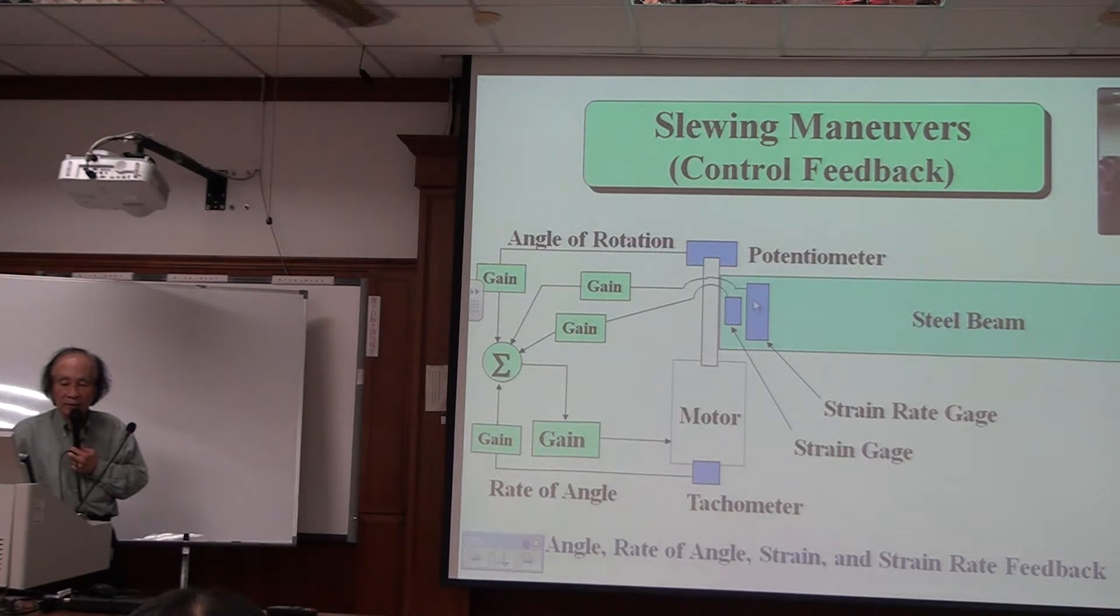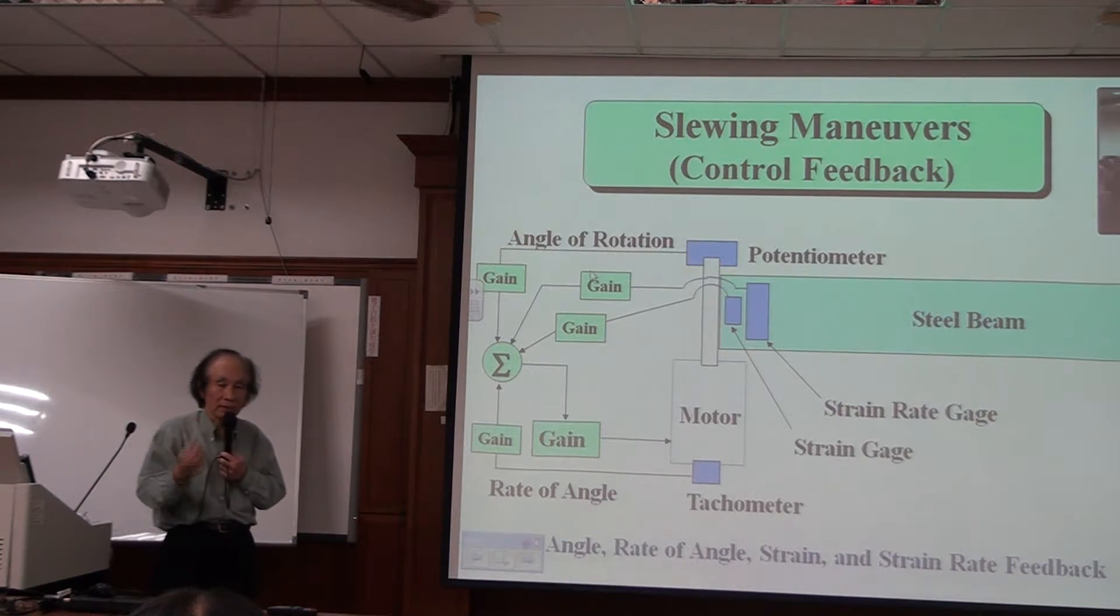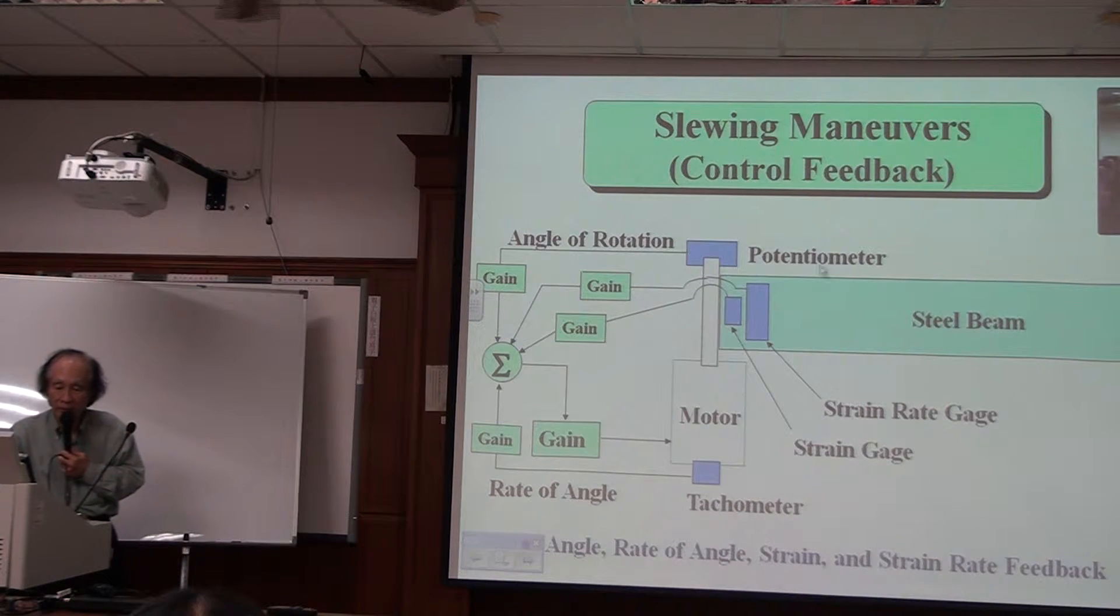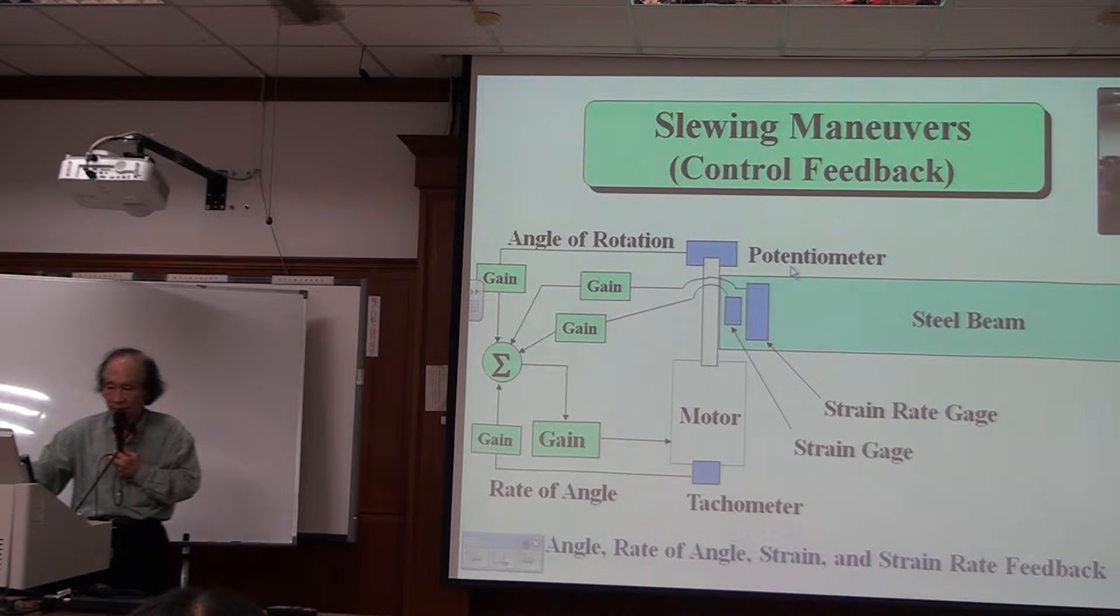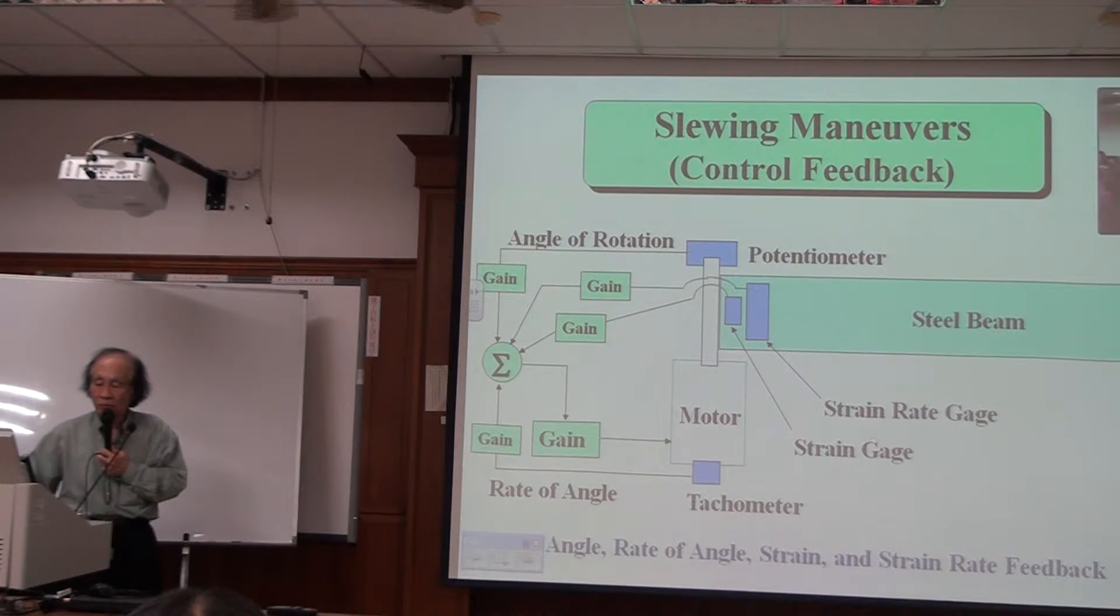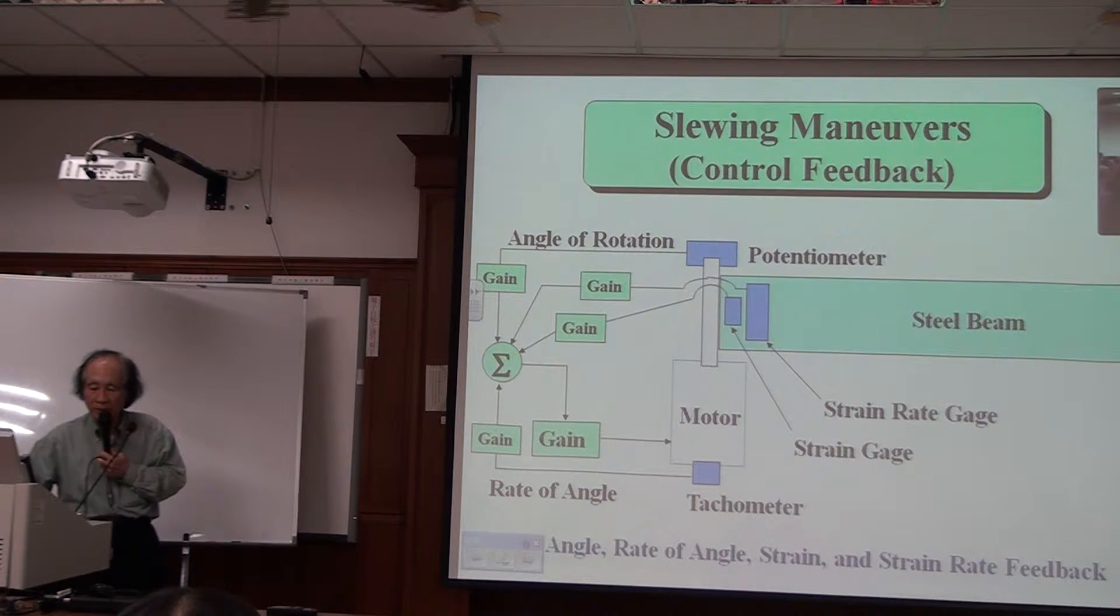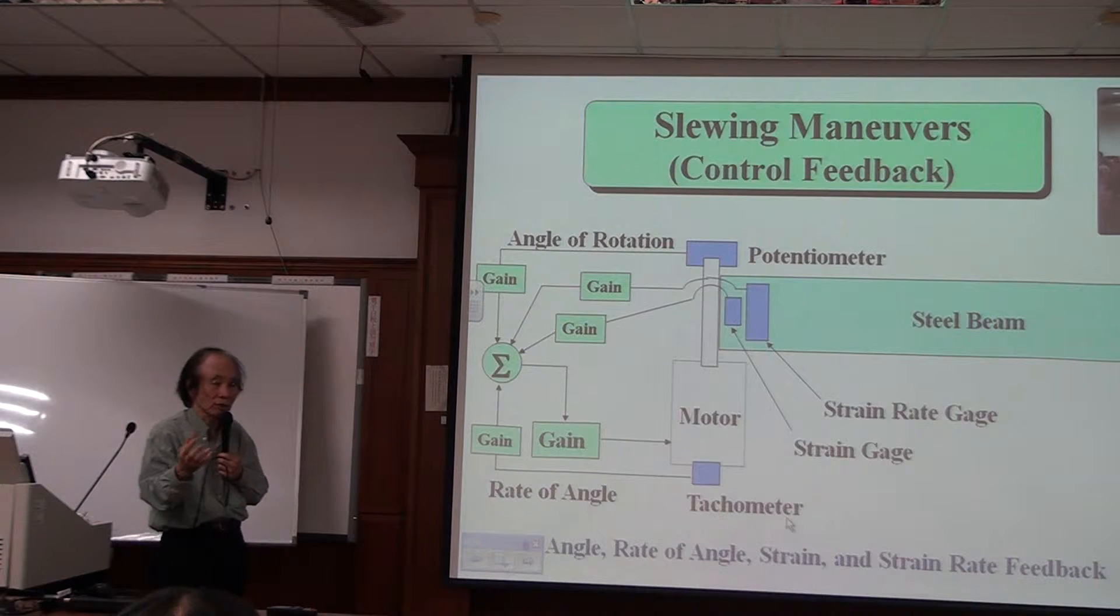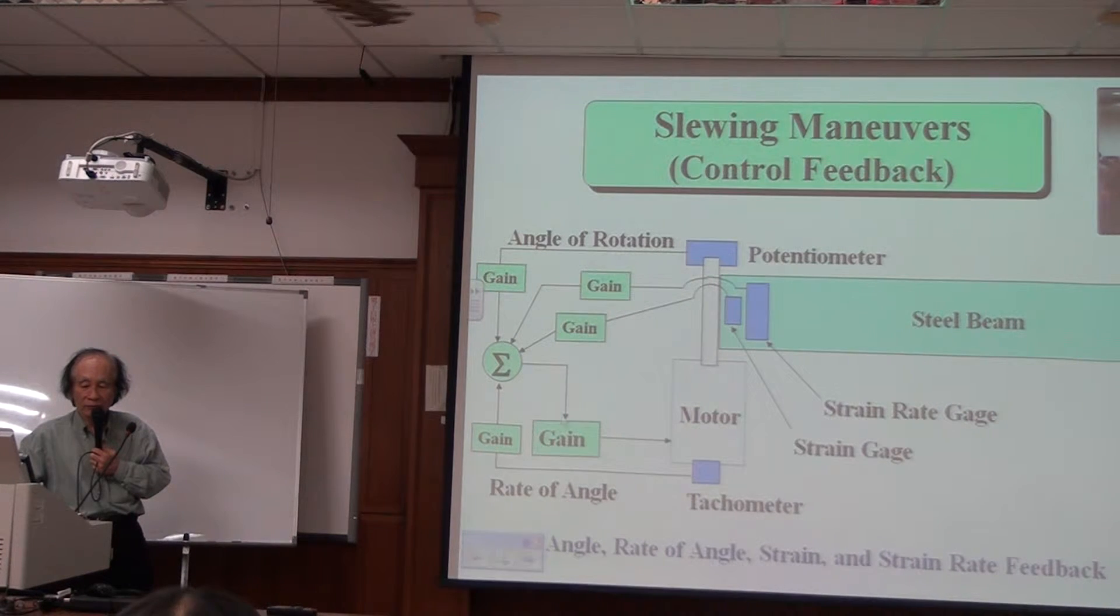This is the sensor to sense the motion of the beam. Each signal comes in, multiplied by a gain—that gain can be less than one or larger than one—and then we sum them together. We have a potentiometer to measure the angle of the beam. So we have a strain gauge to measure strain, a strain rate gauge to measure strain rate, a potentiometer to measure the angle, and a tachometer to measure angular velocity. With all this sensor information together, we add them and feed back to the motor.